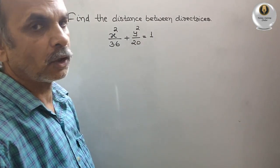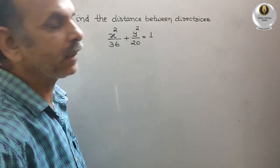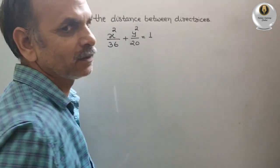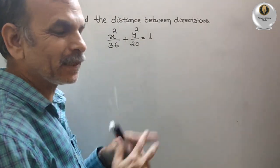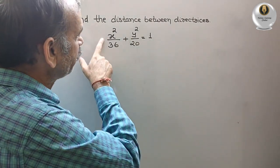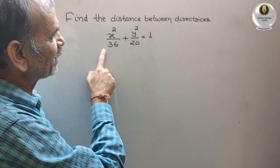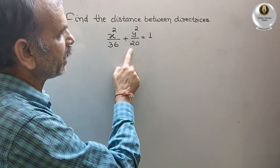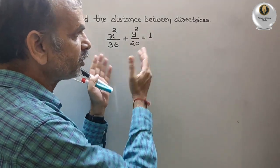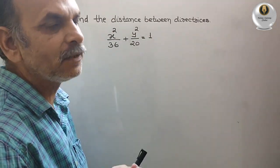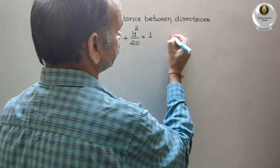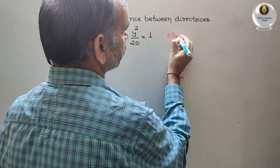Your question — what they have given: find the distance between directrices, that means two directrices. They have given the equation x² / 36 + y² / 20 = 1. If you see this equation, we will know that it is the equation of an ellipse.